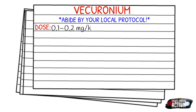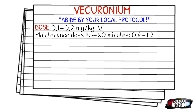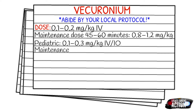Your pediatric dose is going to be 0.1 to 0.3 milligrams per kilogram IV or IO, with a maintenance dose every 20 to 35 minutes of 0.01 to 0.05 milligrams per kilogram IV or IO.